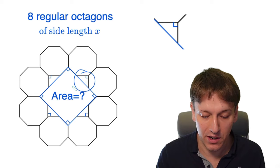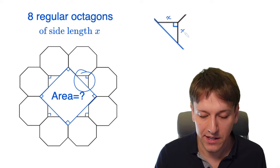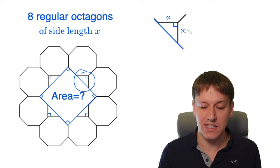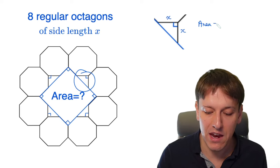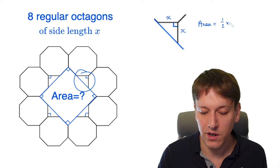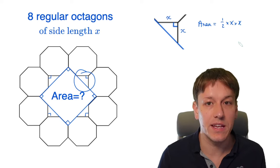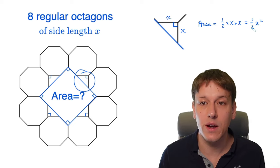Because the side lengths of the octagon are x, then it's an isosceles right angle triangle with both of these sides equal to x. And so the area of these triangles are one half times x times x, half base times height. So that's just one half x squared.